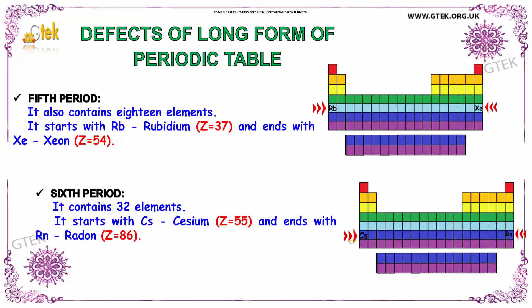The sixth period starts with cesium, whose atomic number is 55, and ends with radon, whose atomic number is 86.